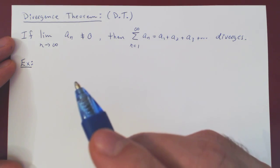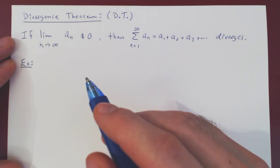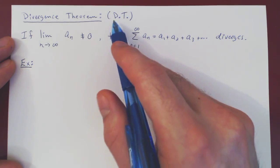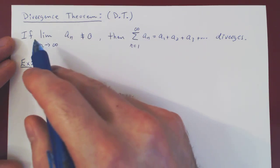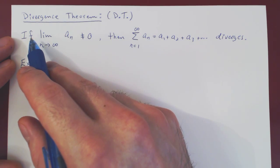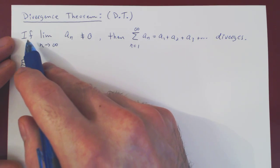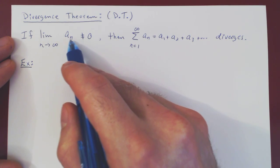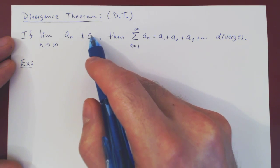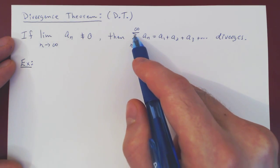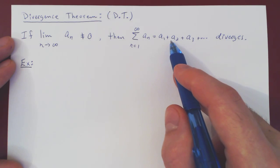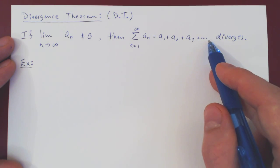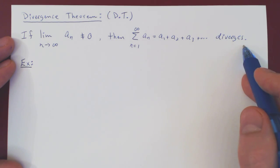In this video, we will look at two examples of the divergence theorem. If you recall, the result is very straightforward and simple: if the sequence aₙ does not converge to 0, then the corresponding series a₁ plus a₂ plus a₃ plus a₄ and so forth automatically diverges.